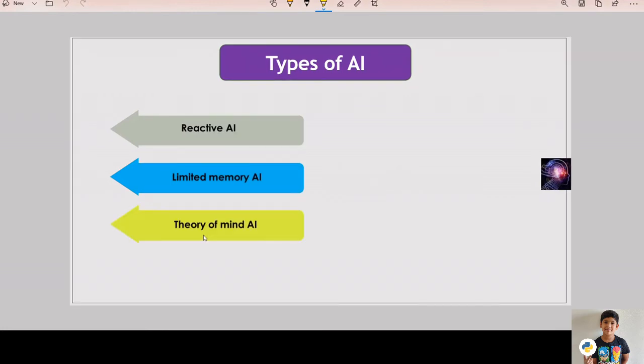Another type is theory of mind AI. Theory of mind AI is the next level of AI systems that researchers are currently engaged in innovating. Particular cognitive and behavioral models can be derived from theory of mind research and directly applied to AI systems. For example, theory of mind could improve the performance of chatbots and other AI assistants to make them behave very similar to people.